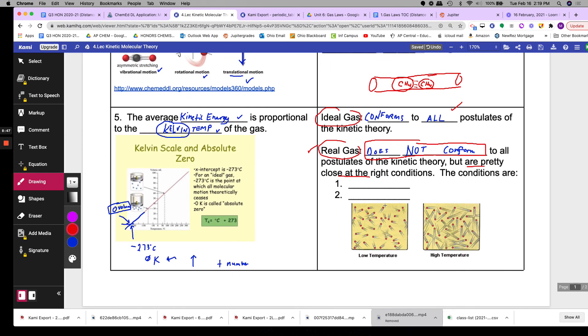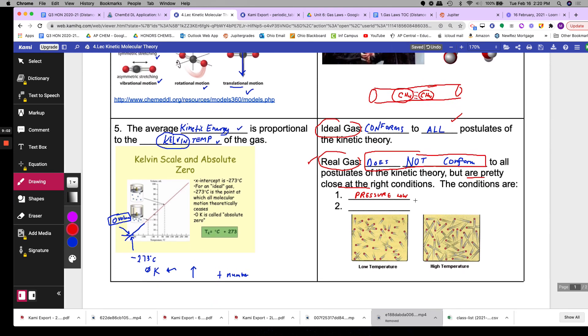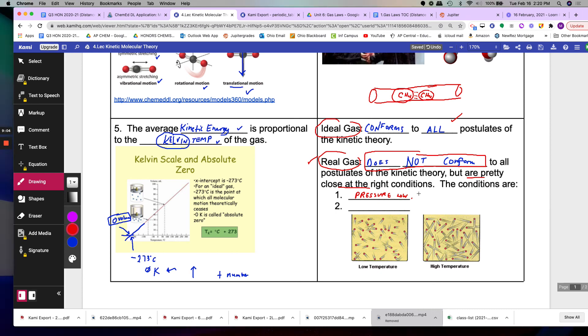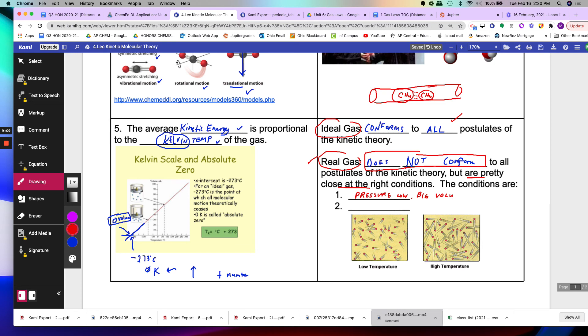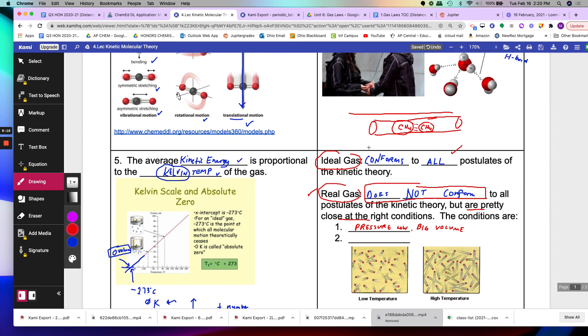So in reality it may not conform to all these parts but you are pretty close at the right conditions. So what you have to do is you have to make sure that the pressure is very low. Pressure is low. That means you're not squeezing them together. To make it really low you have to make the container really big. Big volume. So in this scenario as an engineer if you want the gas to behave ideally you have to make the pipes bigger so then they won't attract. They can't see each other if you don't squeeze them together.